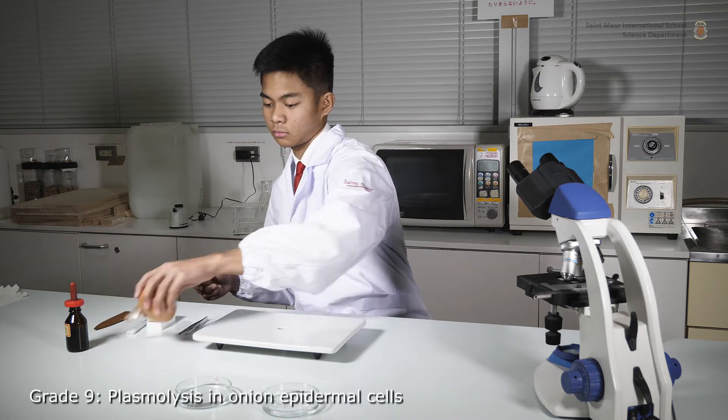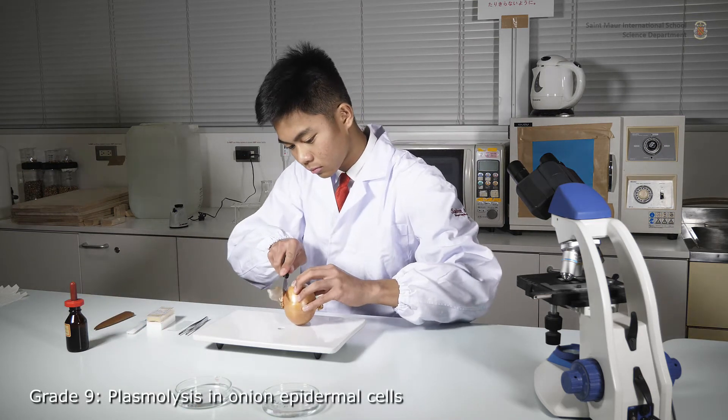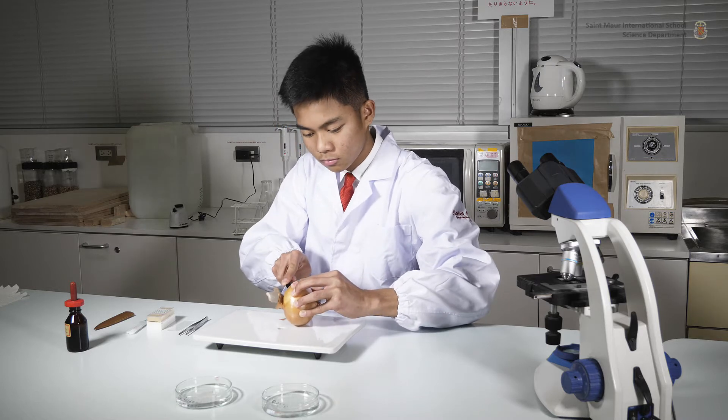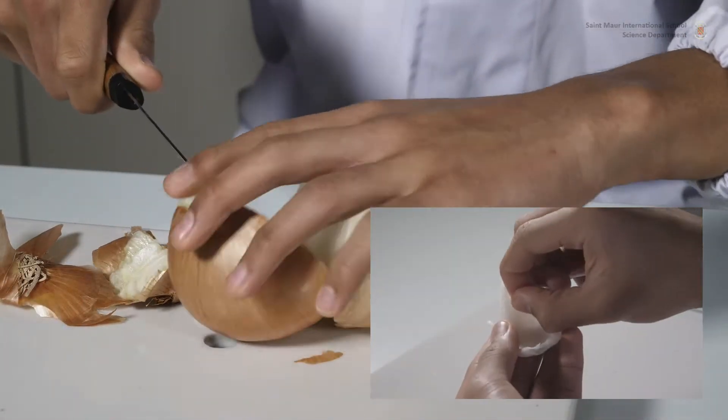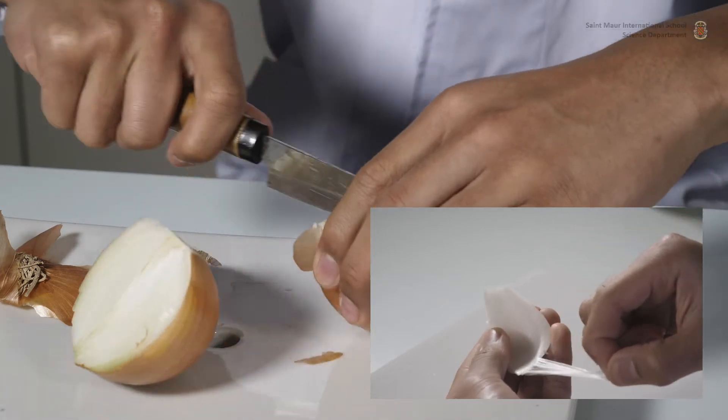First, cut a white onion into four to six sections. Onion is an ideal model organism to study plasmolysis because its epidermis is easy to peel off and quite resistant.